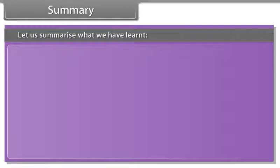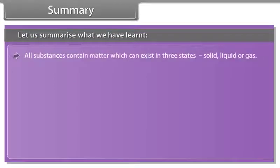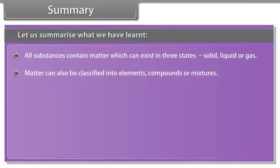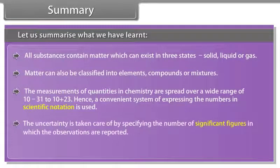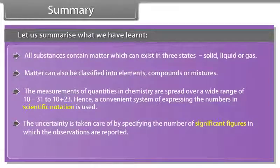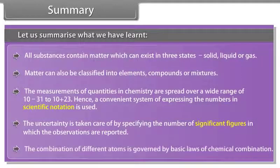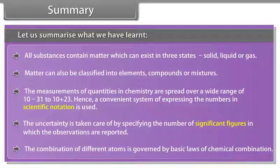Let us summarize what we have learned. All substances contain matter which can exist in three states: solid, liquid or gas. Matter can also be classified into elements, compounds or mixtures. The measurements of quantities in chemistry are spread over a wide range of 10^-31 to 10^+23. Hence, a convenient system of expressing the number in scientific notation is used. The uncertainty is taken care of by specifying the number of significant figures in which the observations are reported. The combination of different atoms is governed by basic laws of chemical combination.